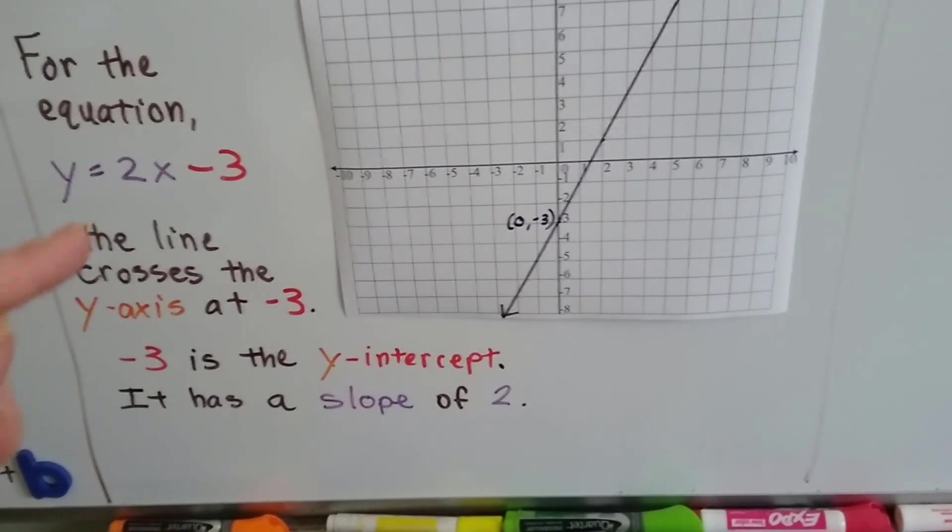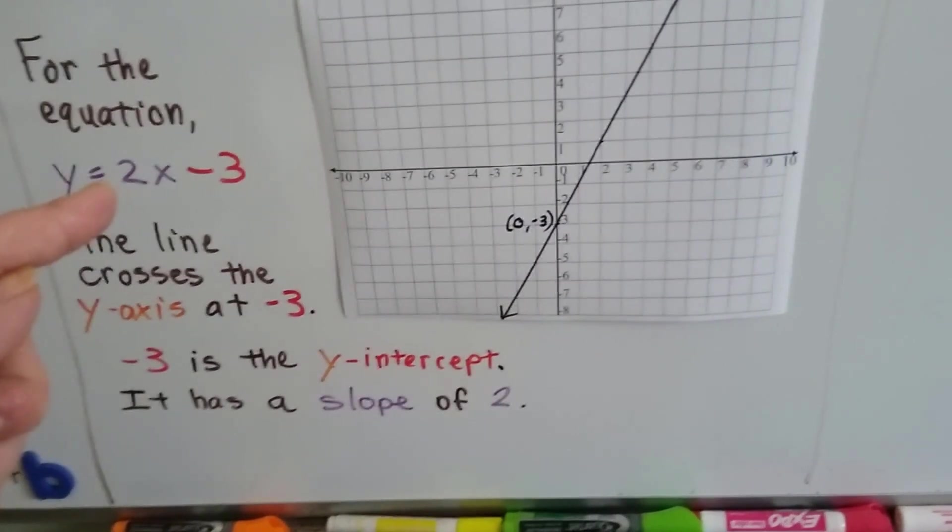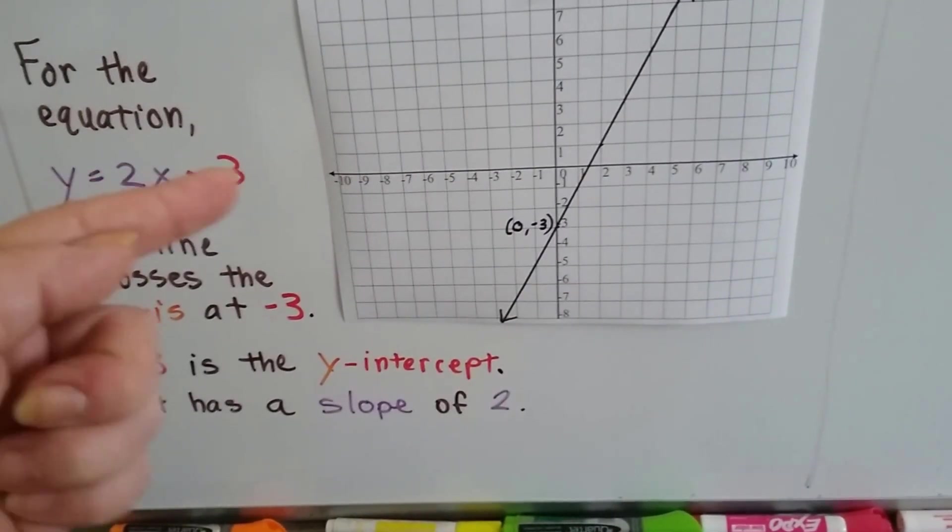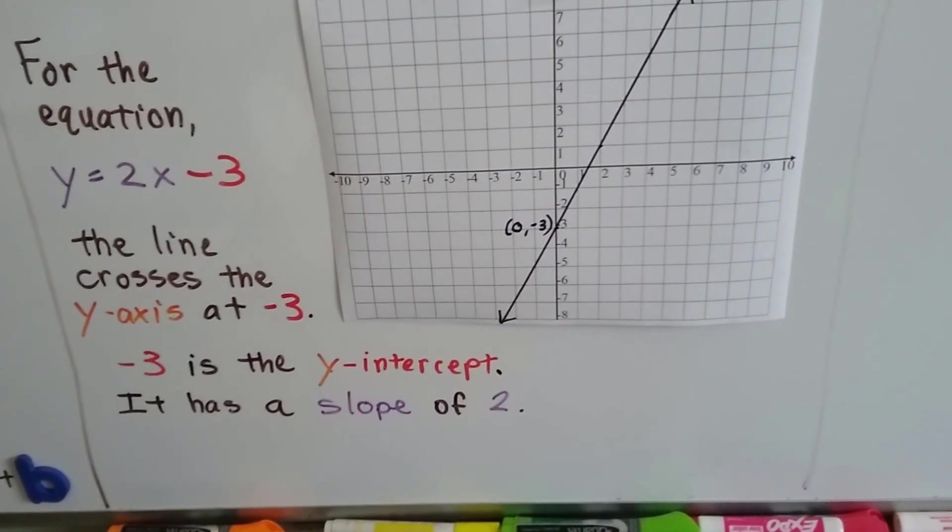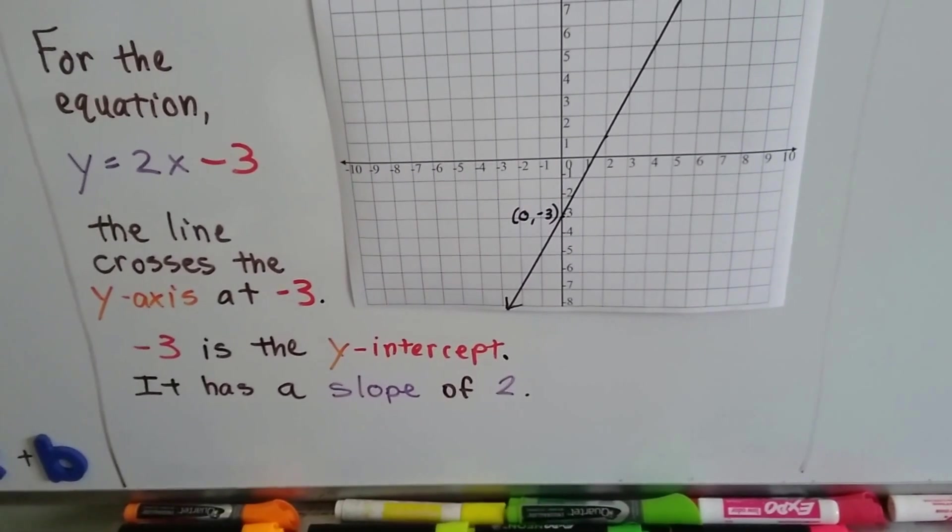It has a slope of 2. We can see that because m is the slope. It's the coefficient to x. So we know it's got a slope of 2. And just by looking at this equation, we know its slope and its y-intercept b.